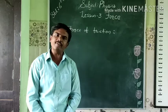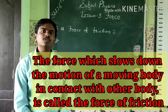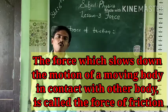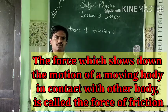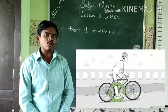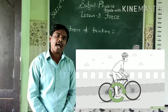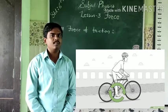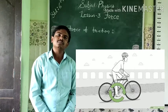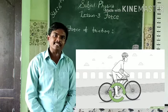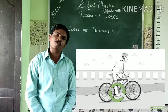Students, what is the definition of Force of Friction? The force which slows down the motion of the moving body in contact with the other body is called Force of Friction. For example, when we stop the pedaling of a bicycle, the bicycle covers a certain distance and it slows down, because there is a force of friction between the surface of the road and the surface of the tyres.